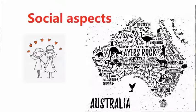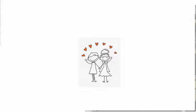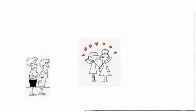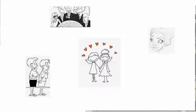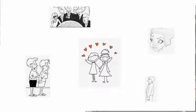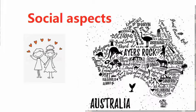Hello everyone. This video is to provide some help with an Australian partner visa application, or spouse visa application. Many people ask: what does it mean by the social aspects of a relationship? Basically, when it comes to social aspects, you need to tell the Department of Immigration, one by one, who knows your relationship. Social aspects of a relationship mean how you present yourselves as a couple to family and friends in society.